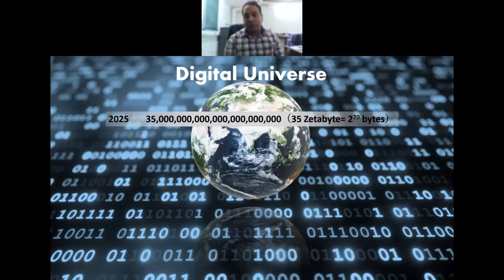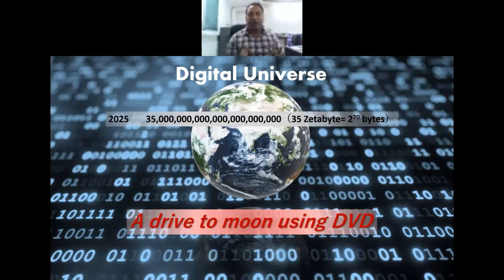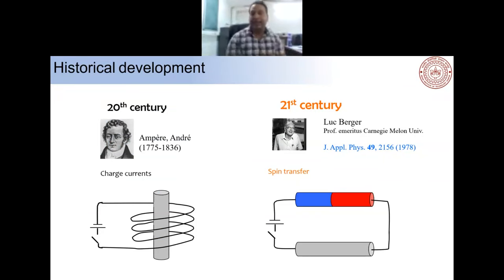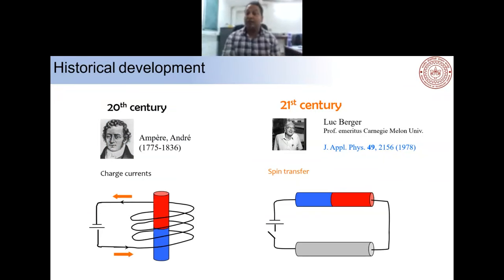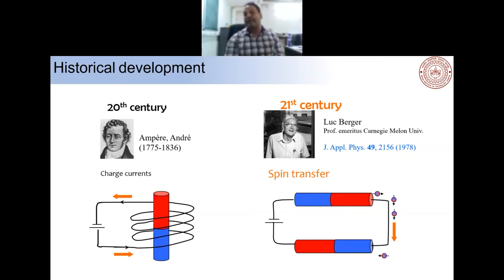By 2025 we can have 35 zettabytes of data forming this digital universe. If we were storing all this data on DVDs stacked one over the other, the stack would extend past the moon. We have come a long way from the 20th century, where we utilized Ampere's law to create magnetic fields to store information, to spin transfer technology where we pass current through a ferromagnet, converting unpolarized current to polarized current and storing information using pure spin current.